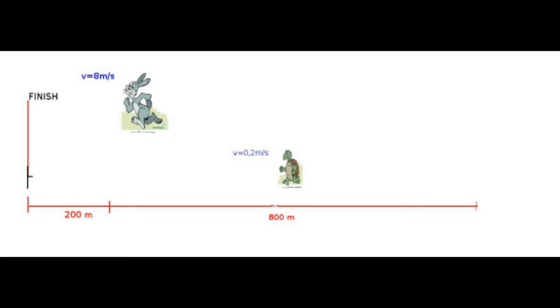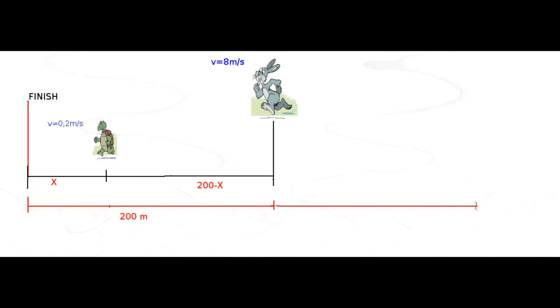The hare waits for a while after the tortoise passes and then runs toward the finish line again at 8.00 meters per second. Both the hare and the tortoise cross the finish line at the exact same instant. Assume both animals, when moving, move steadily at their respective speeds.